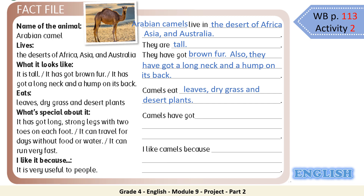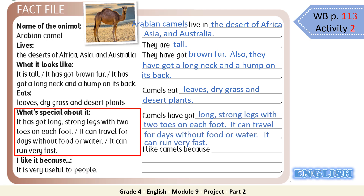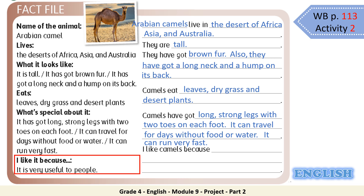Let's continue. The next line: 'Camels have got.' What's special about it? It has got long strong legs with two toes on each foot. It can travel for days without food or water. It can run very fast. So we would say: camels have got long strong legs with two toes on each foot, it can travel for days without food or water, it can run very fast. And the last one: I like camels because they are very useful to people.